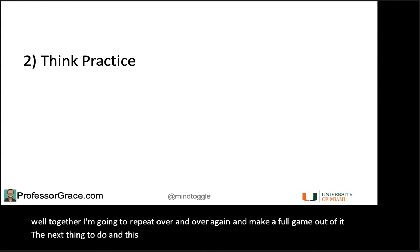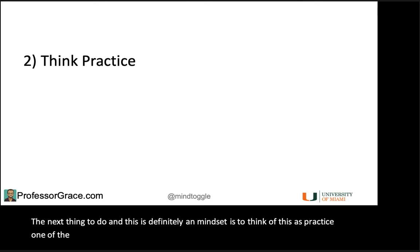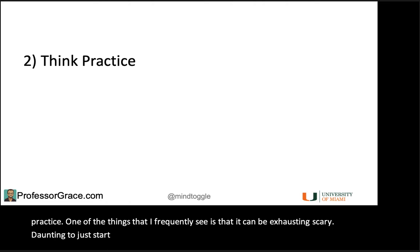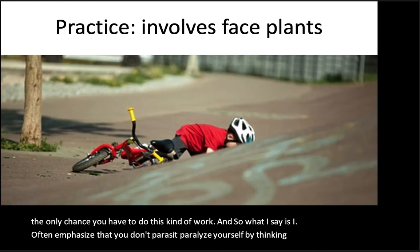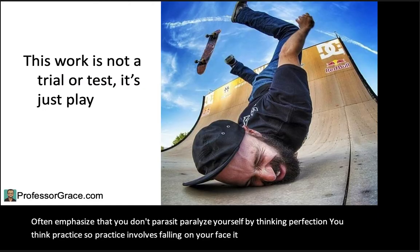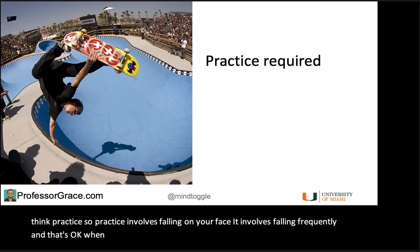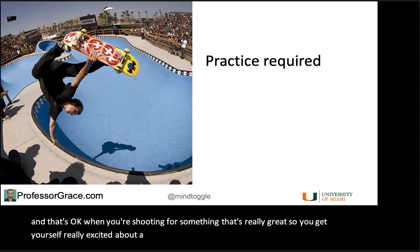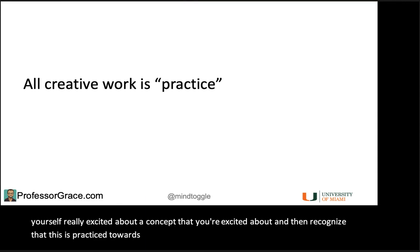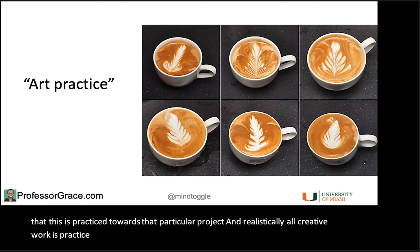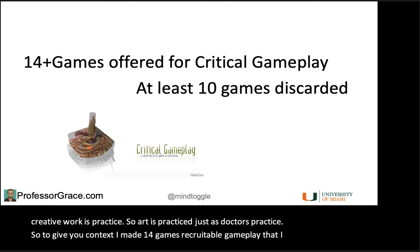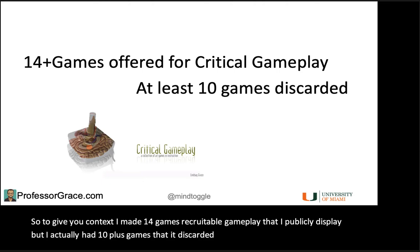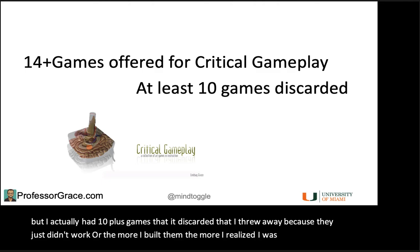The next thing, and this is definitely about mindset, is to think of this as practice. One of the things I frequently see is that it can be exhausting, scary, daunting to start this kind of project by thinking of it as the ultimate project — the only chance you have to do this kind of work. What I say is don't paralyze yourself by thinking perfection, think practice. Practice involves falling on your face — it involves falling frequently — and that's okay when you're shooting for something that's really great. All creative work is practice. Art is practiced just as doctors practice. To give you context, I made 14 games for Critical Gameplay that I publicly display, but I actually had 10-plus games that I discarded because they just didn't work, or the more I built them the more I realized I was going down a bad path. That's why it's called practice, not perfection.